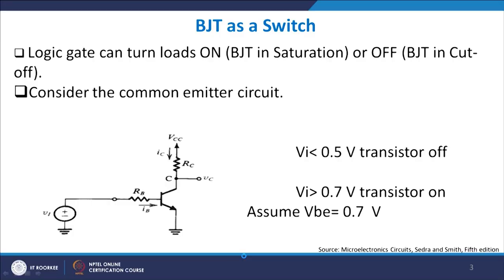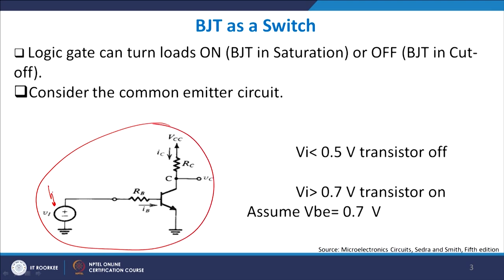When the base-emitter voltage goes beyond 0.7V — which is for silicon — we would expect the device to become forward biased. As a result, it will emit a large number of electrons if it is an NPN transistor, and the device will be in the on state. It will be in the off state provided the base-emitter voltage is lower than 0.7V.